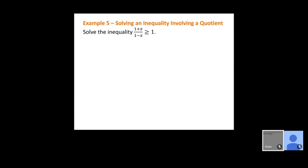We want to find all values of x that work for the given inequality. First thing we always want to do is move everything to one side. So I'm going to move the 1 over to the left, giving us (1+x)/(1−x) − 1 ≥ 0. Whenever you have a non-linear inequality — with x in a numerator and denominator, or an x² or x³ — that's when we move everything to one side first.